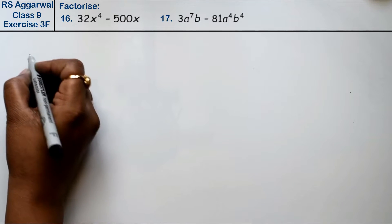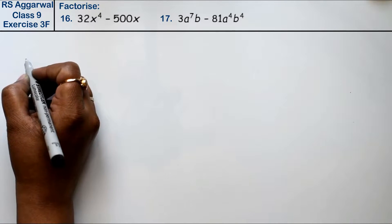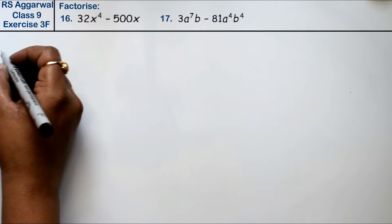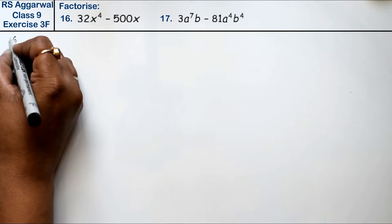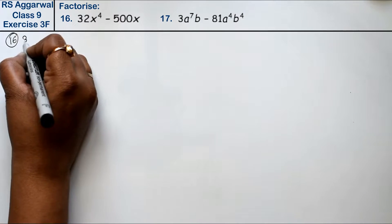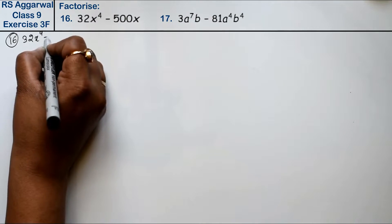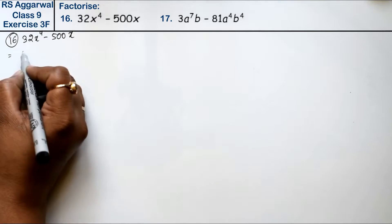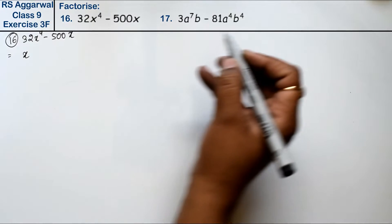Let's do question number 16 of Exercise 3F on factorization of polynomials. Question 16 is 32x^4 minus 500x. Friends, in these two terms, x is common. What else is common?